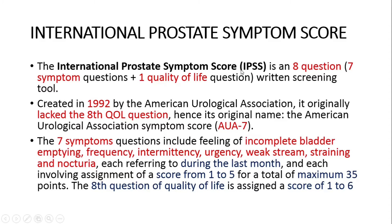The 7 symptoms described in IPSS include feeling of incomplete bladder emptying, frequency, intermittency, urgency, weak stream, straining, and nocturia. Each of these 7 symptoms are assessed over the last month and each symptom is scored from 0 to 5.